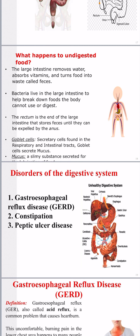There is bacteria living in the large intestine that helps break down food the body cannot digest. The rectum is the end of the large intestine that stores feces until they are expelled. Inside the large intestine there are goblet cells and mucus — goblet cells secrete mucus, which is a slimy substance used to lubricate and facilitate the movement of food.